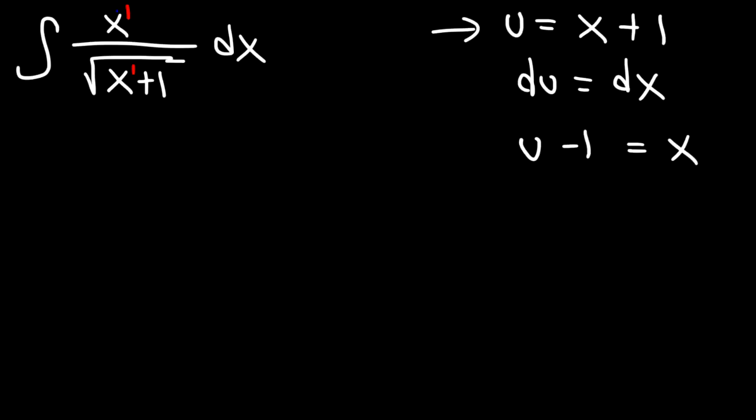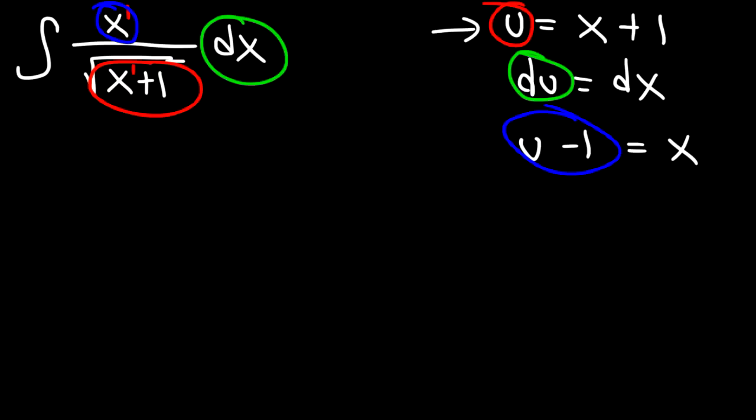So let's replace x with u minus 1, and let's replace x plus 1 with u, and let's replace dx with du. So we're going to have the integral of u minus 1 divided by the square root of u du.